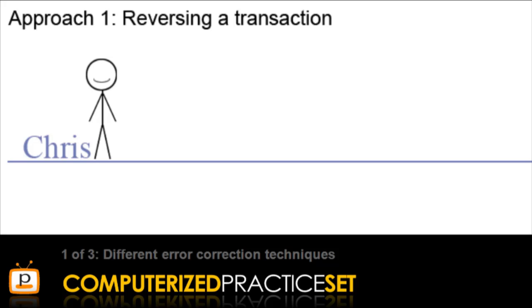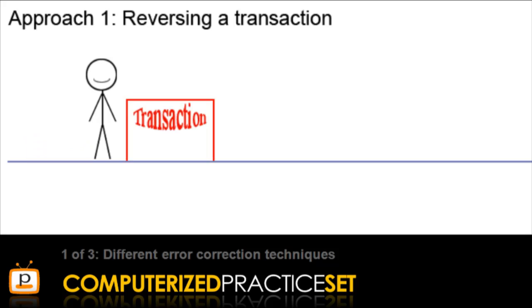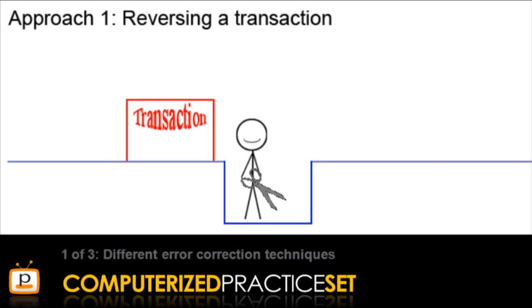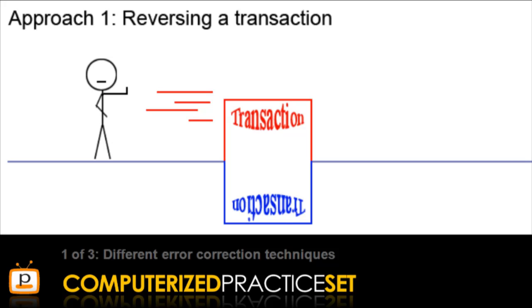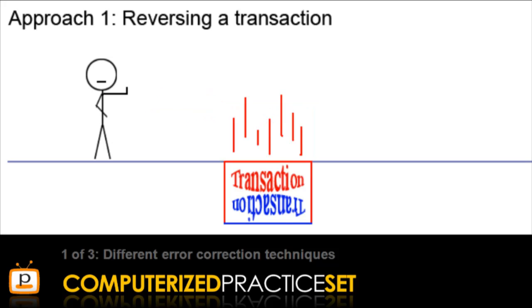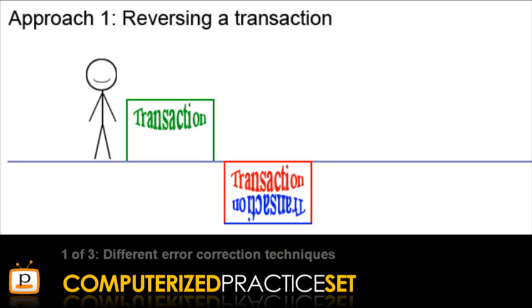Meet Chris. Chris has a transaction, but there's a problem — it's the wrong transaction. To reverse this transaction, Chris must construct a transaction that is the exact opposite. These two transactions work together to exactly cancel each other out. This leaves the situation clear to bring in the correct transaction.